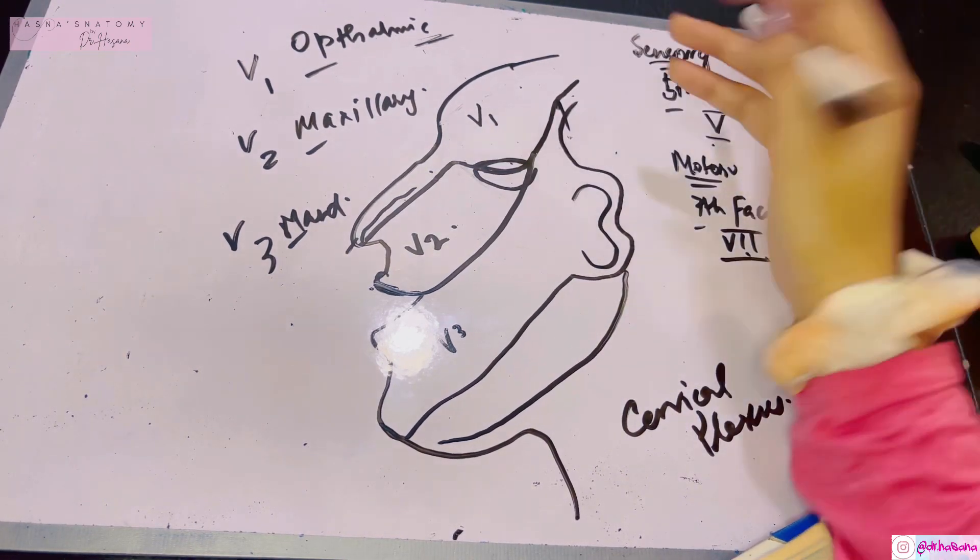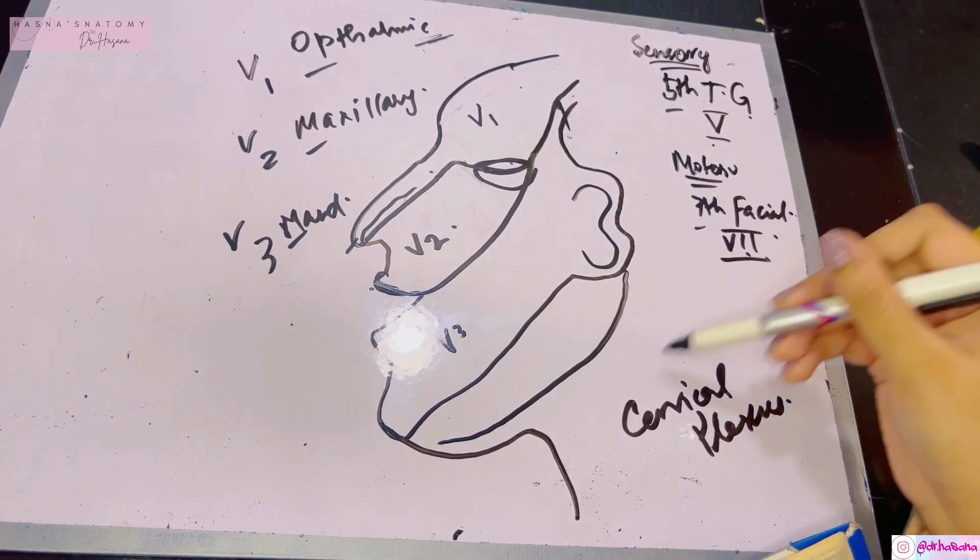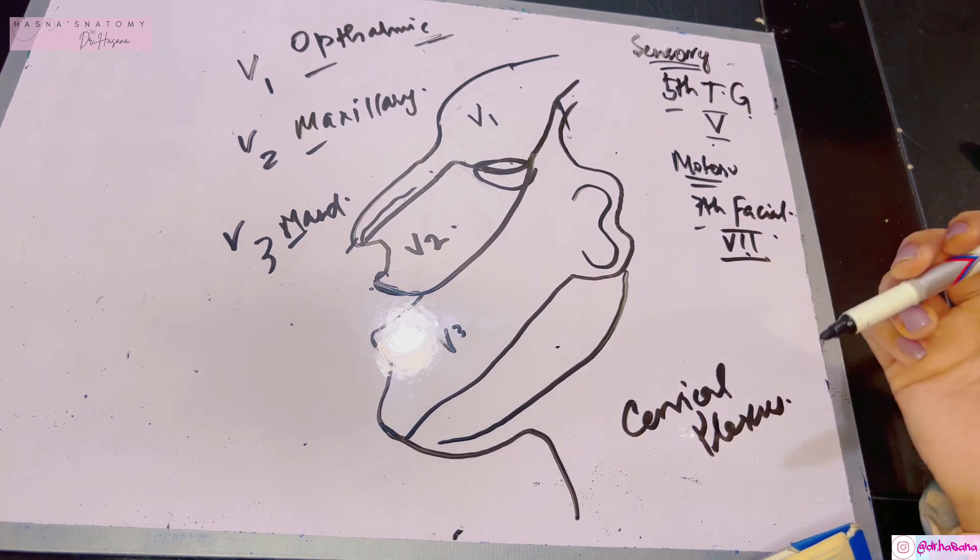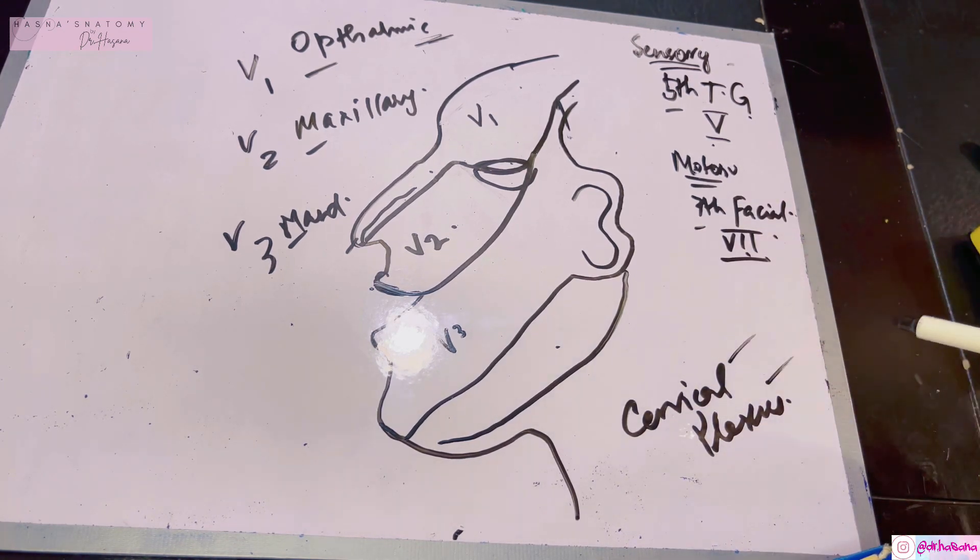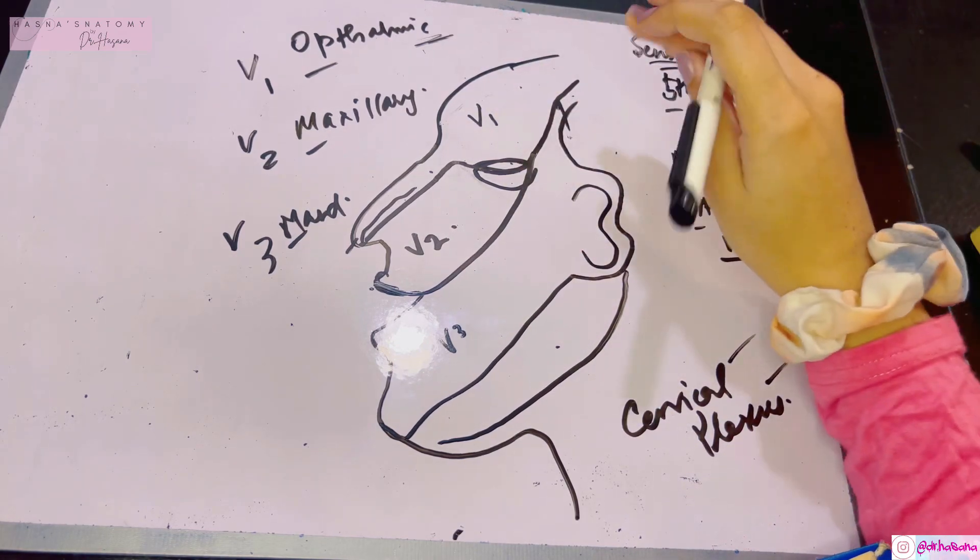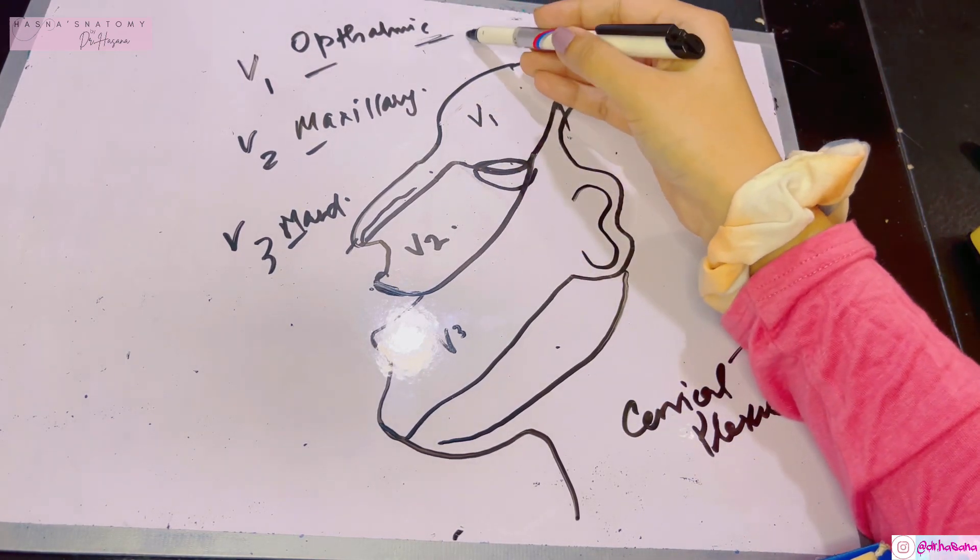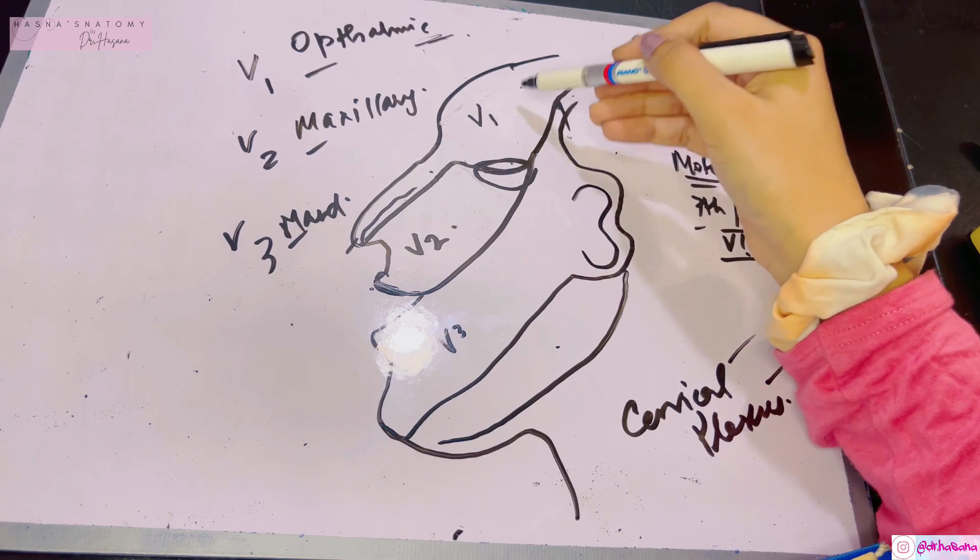Below this is the supply from the cervical plexus in the form of greater auricular nerve at the angle of the jaw and anterior cutaneous nerves. In the V1, the branches will be named exactly as their area of supply. The first branch is supraorbital, obviously above the orbit.